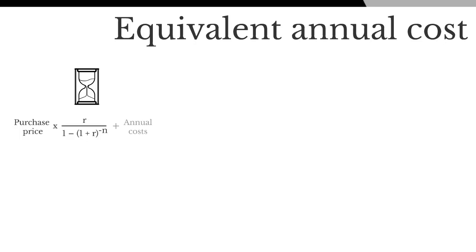Once you've done that, you add the annual cost for the asset. R is the discount rate, so that is the cost of capital, and N is the number of periods, so the number of periods that the asset will be around for.